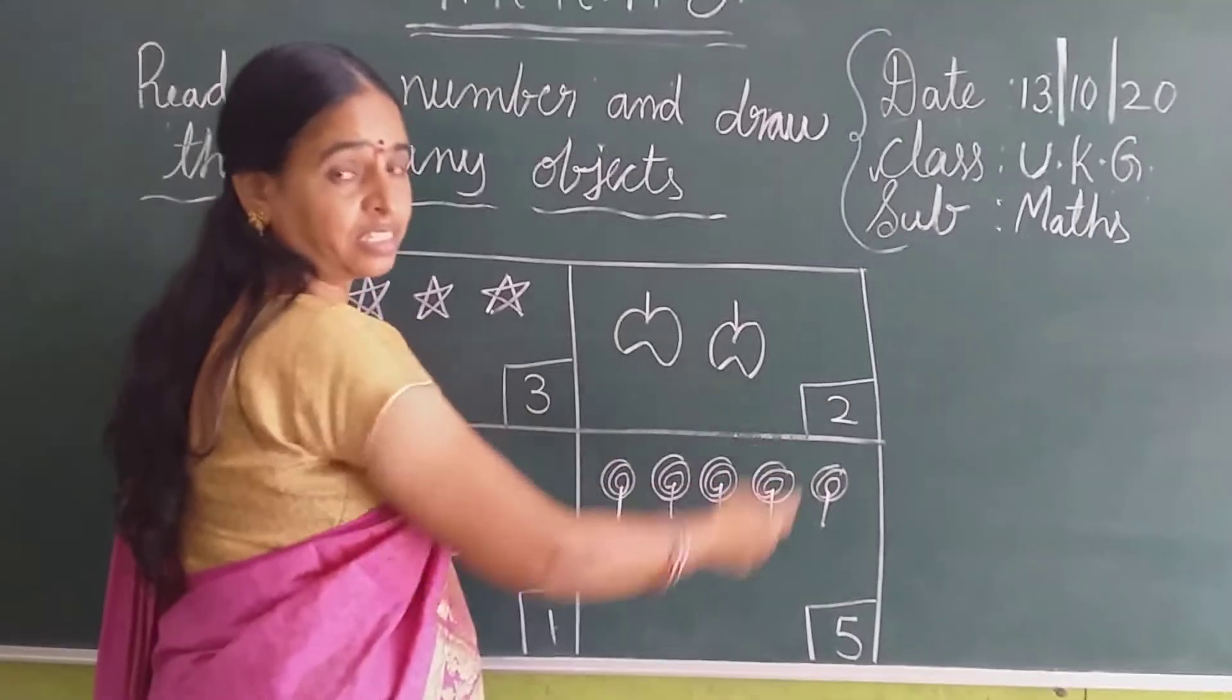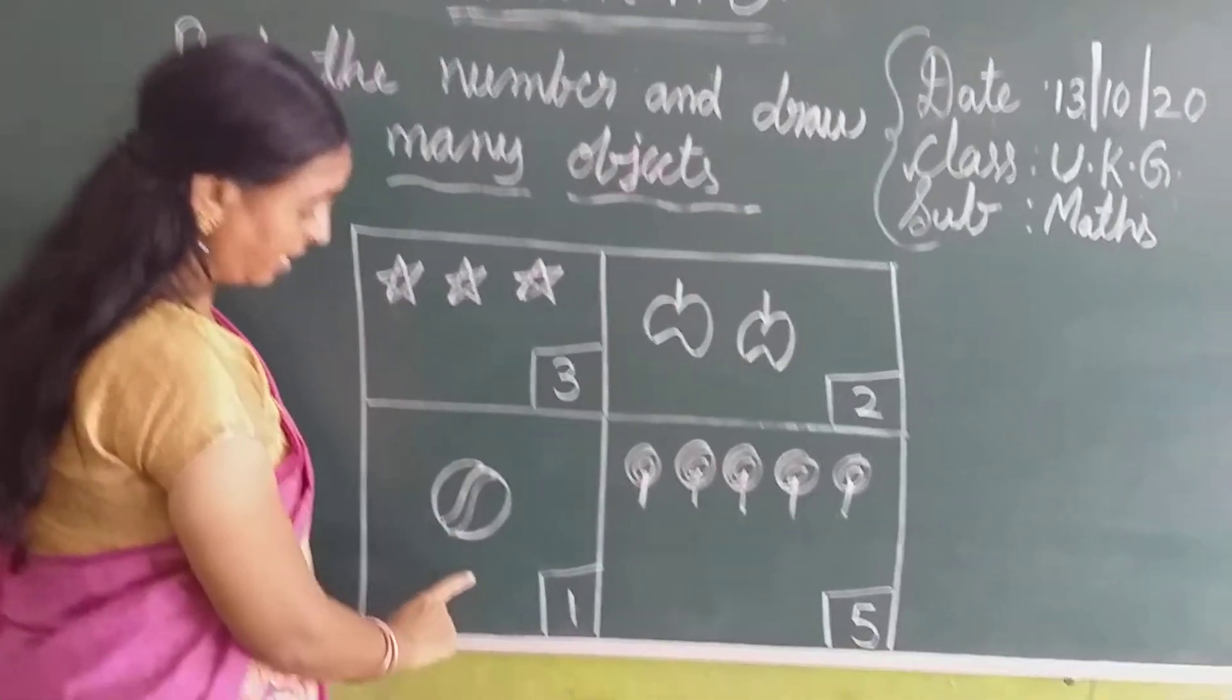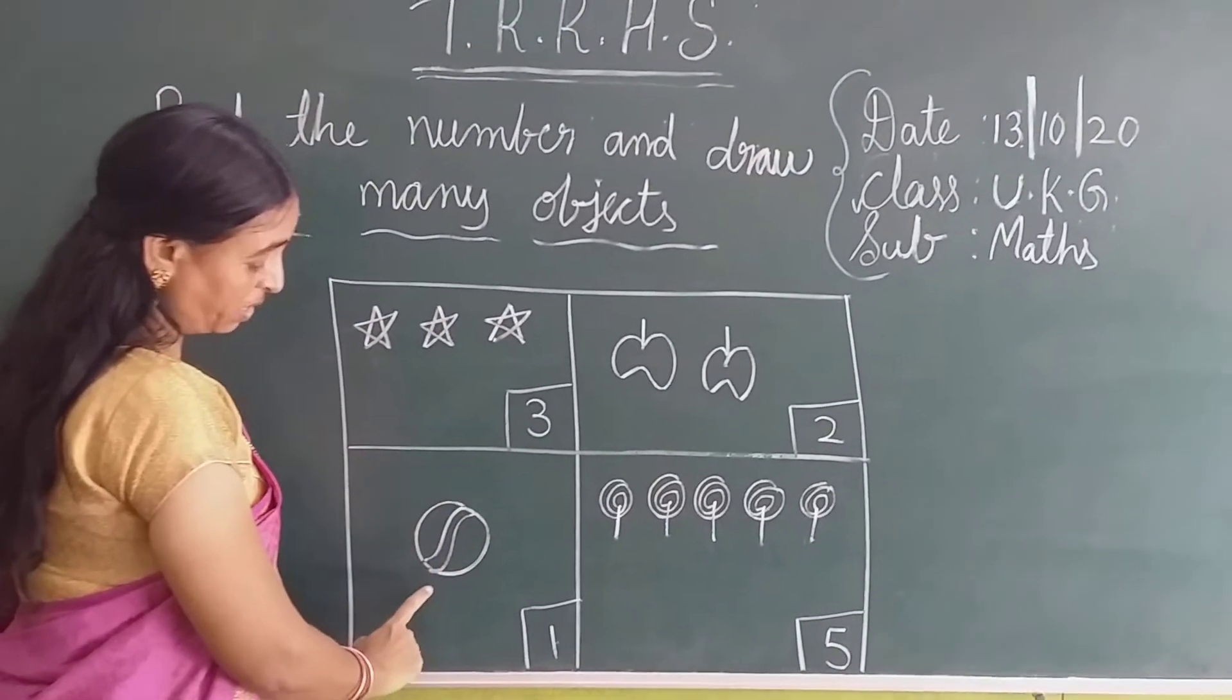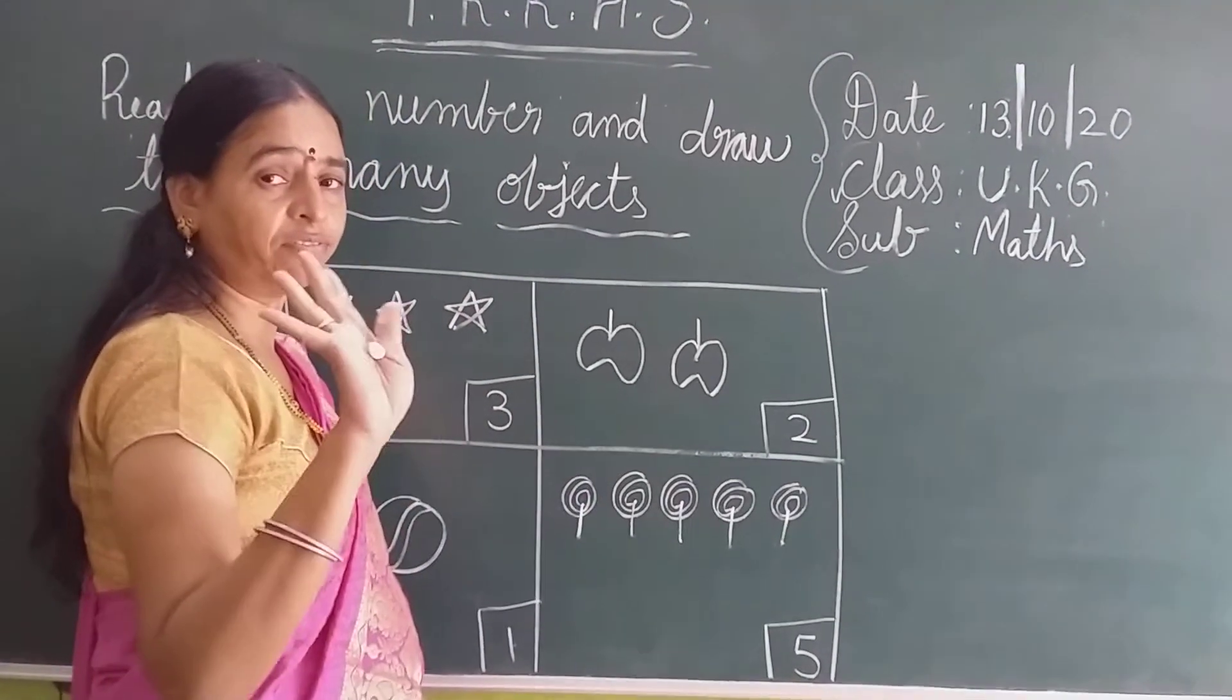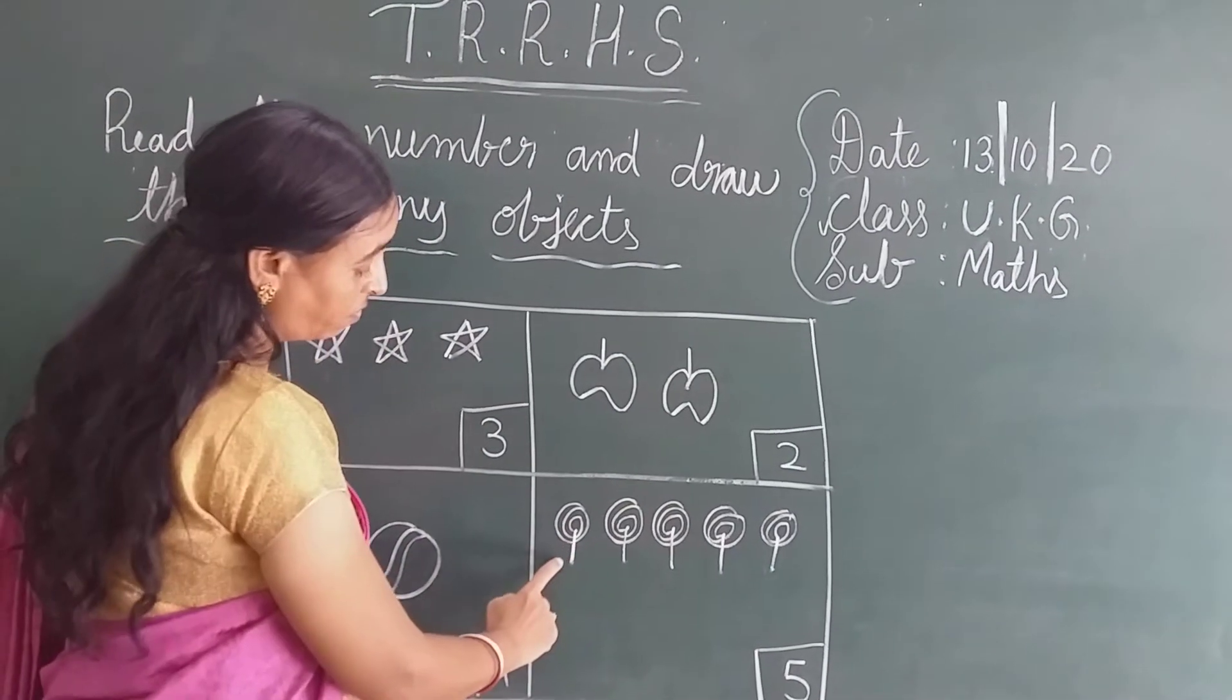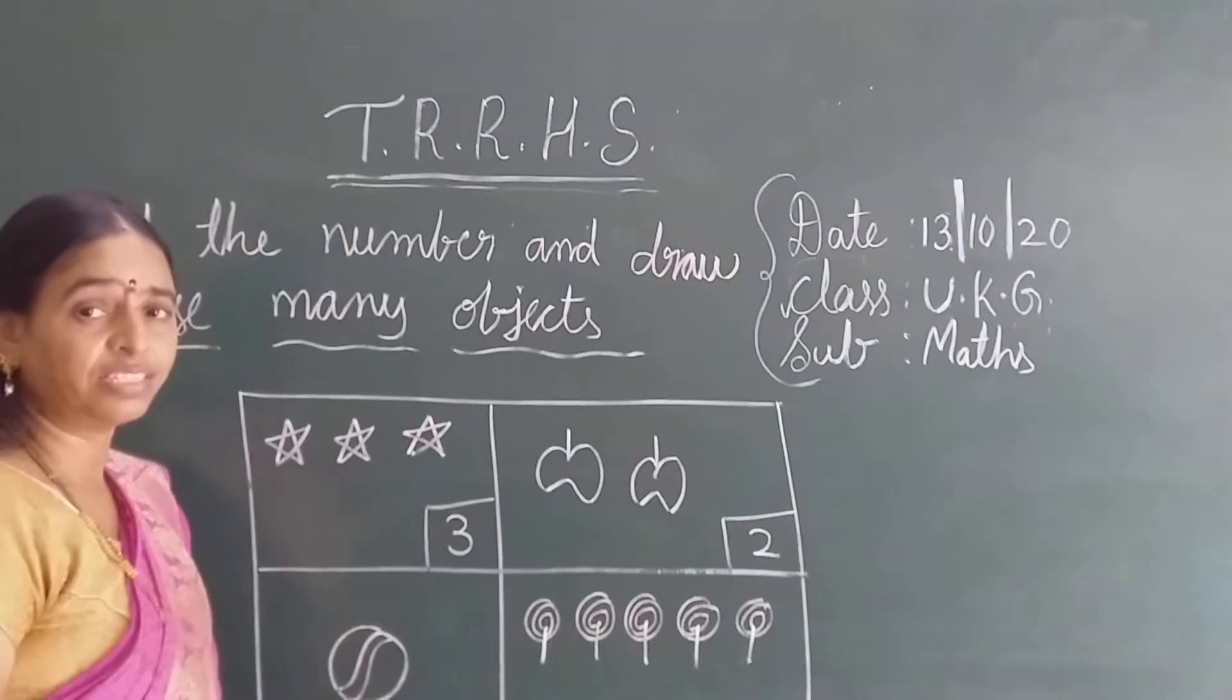Which number is this? Number 2. Now how many is there? 1, 2. And here what is the number? 1. So how many balls are there? 1. And here number 5. So how many lollipops are there? 1, 2, 3, 4, 5. Yes.